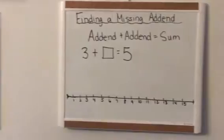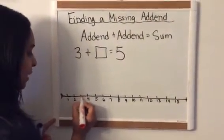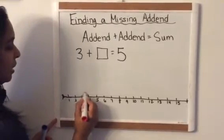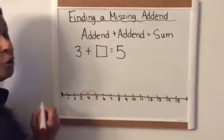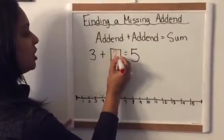I'm going to start by using my number line to help me. So I know that if I have three, that's going to take me one, two more jumps to get to five. So I know that my answer here is going to be two.